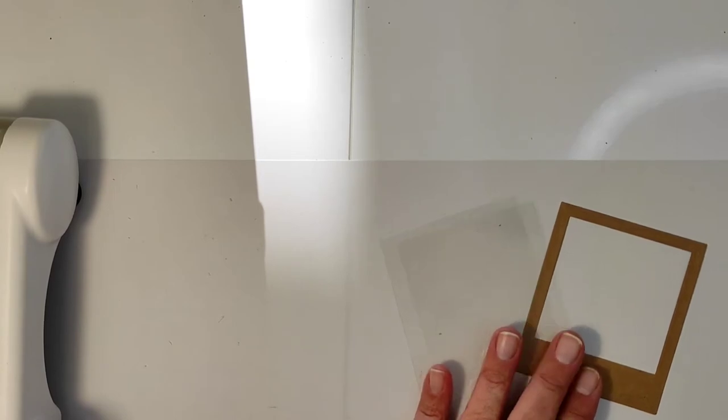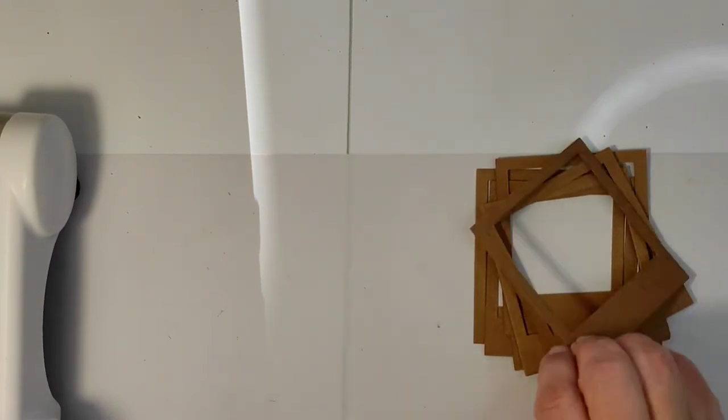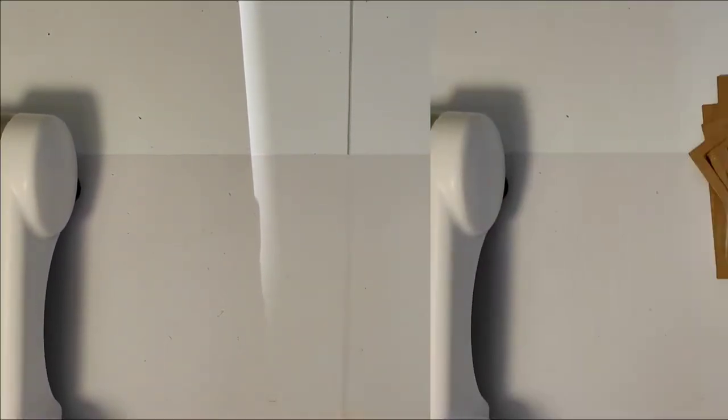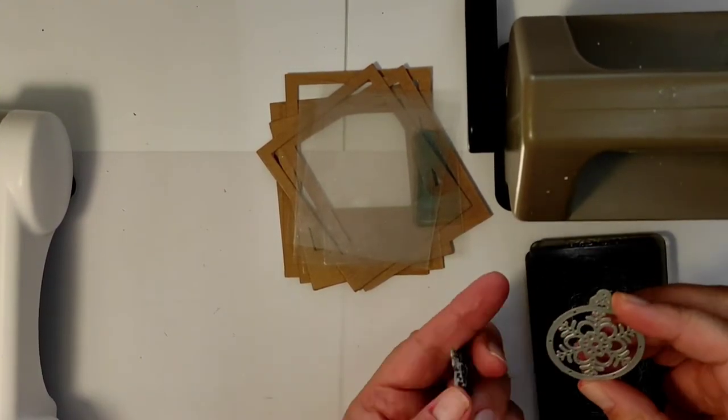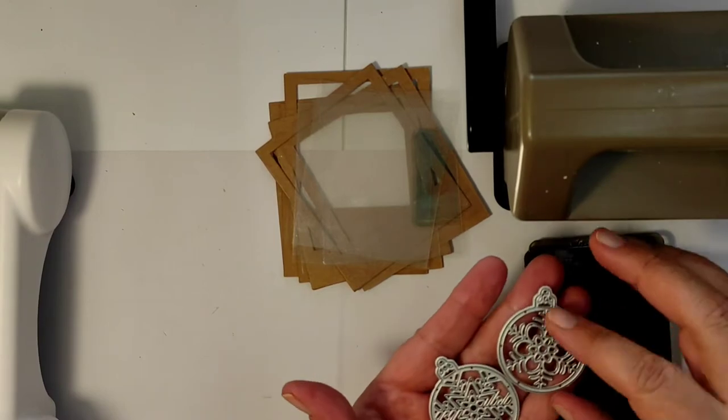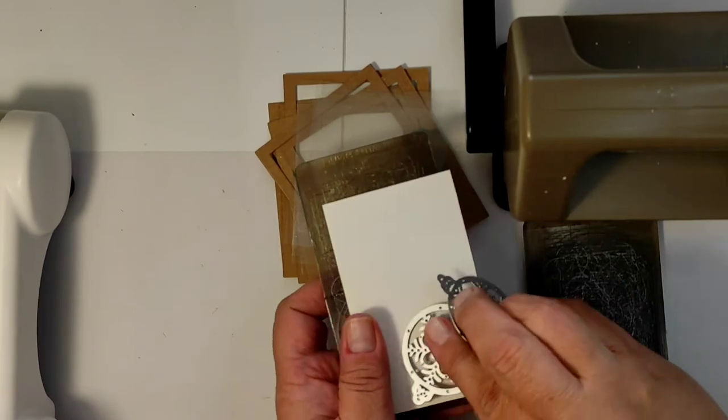So I'm starting by cutting these squares using a polaroid cutting die, but it can be any die that cuts squares. I think that this die was by Nicole Silhouette and I cut the equally sized pieces of transparency.